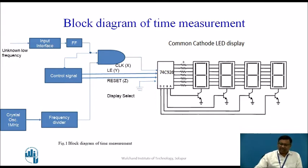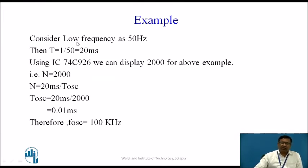Time period measurement can be better understood by taking an example. Consider a low frequency signal whose time period is to be measured: 50 hertz. From this we can find out the time period T is equal to 1 by 50, which is 20 milliseconds. So, the time period of this input signal frequency is 20 milliseconds. We should get this value on the display device. Using IC74C926, which consists of four decade counters, we can display a maximum four-digit value. For the above example of 50 hertz, the count value will be 2000.